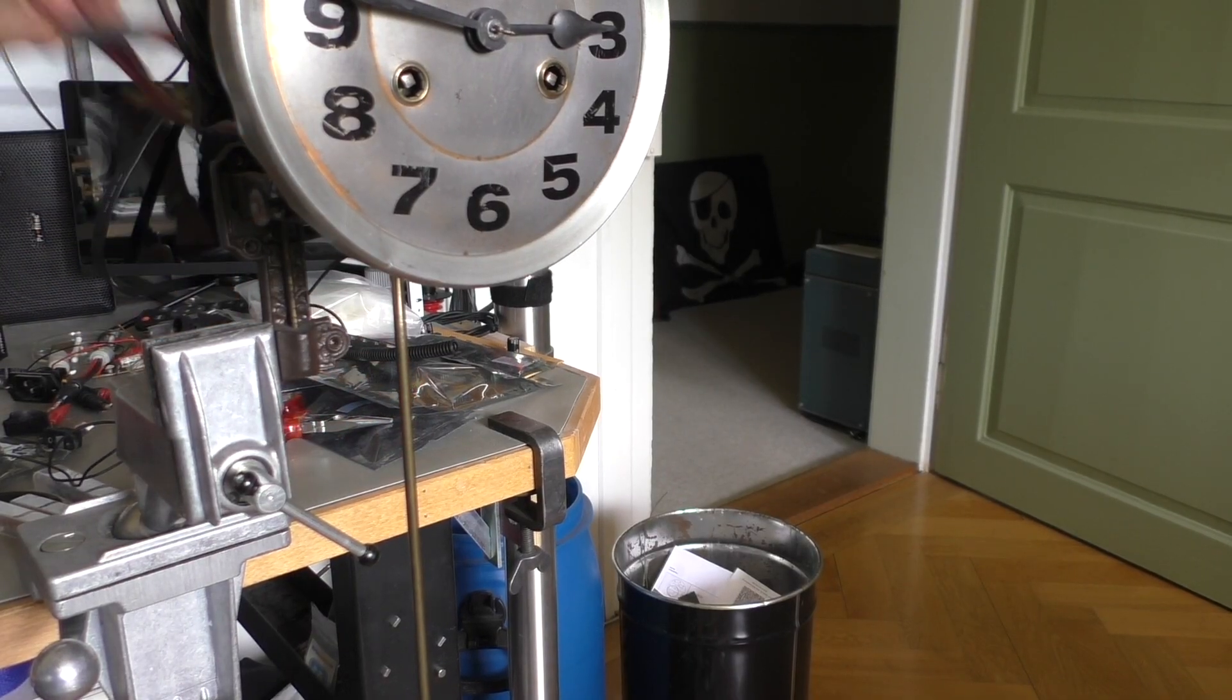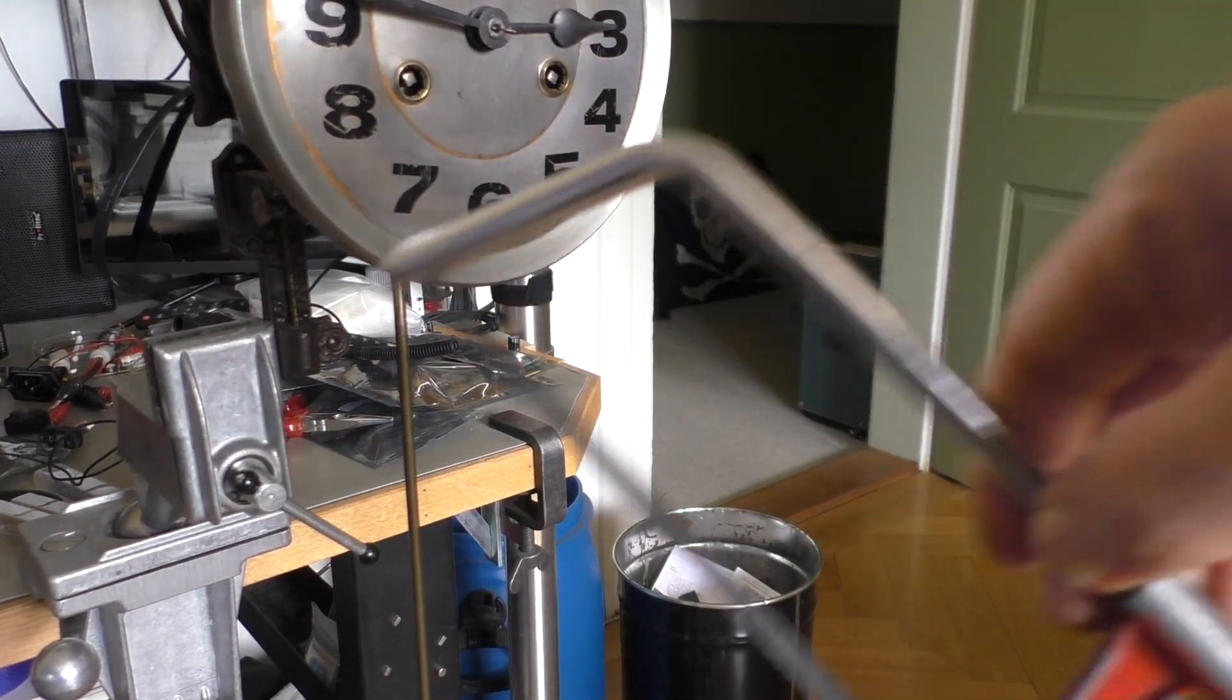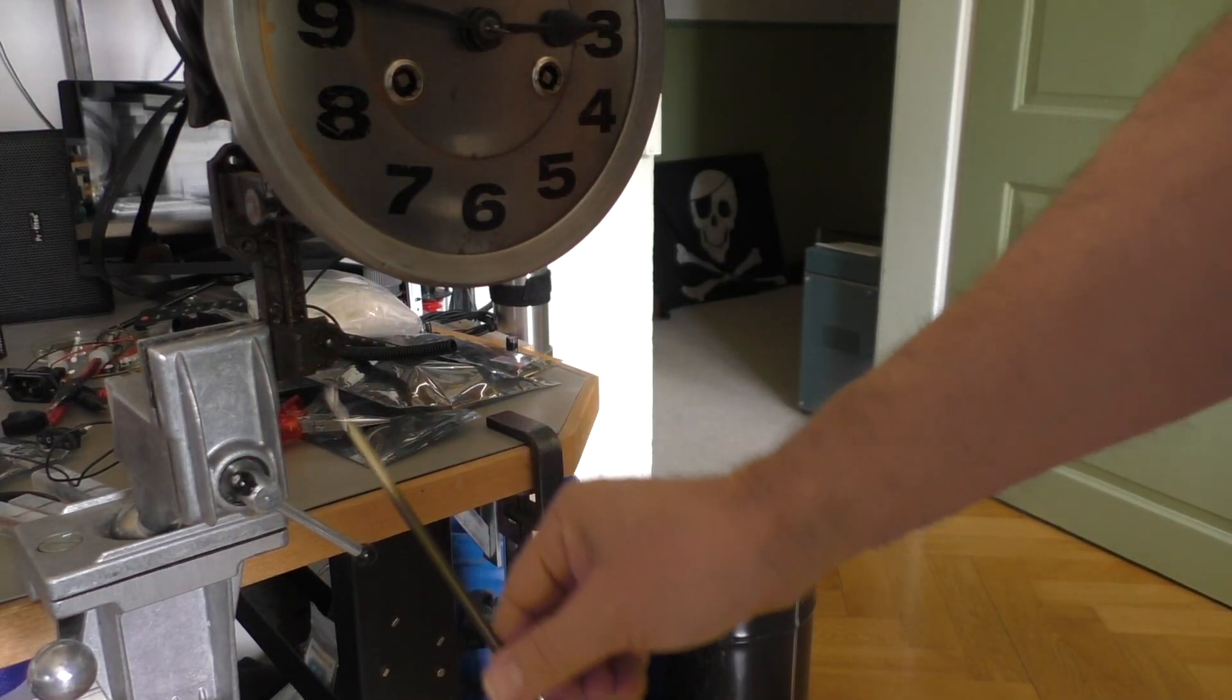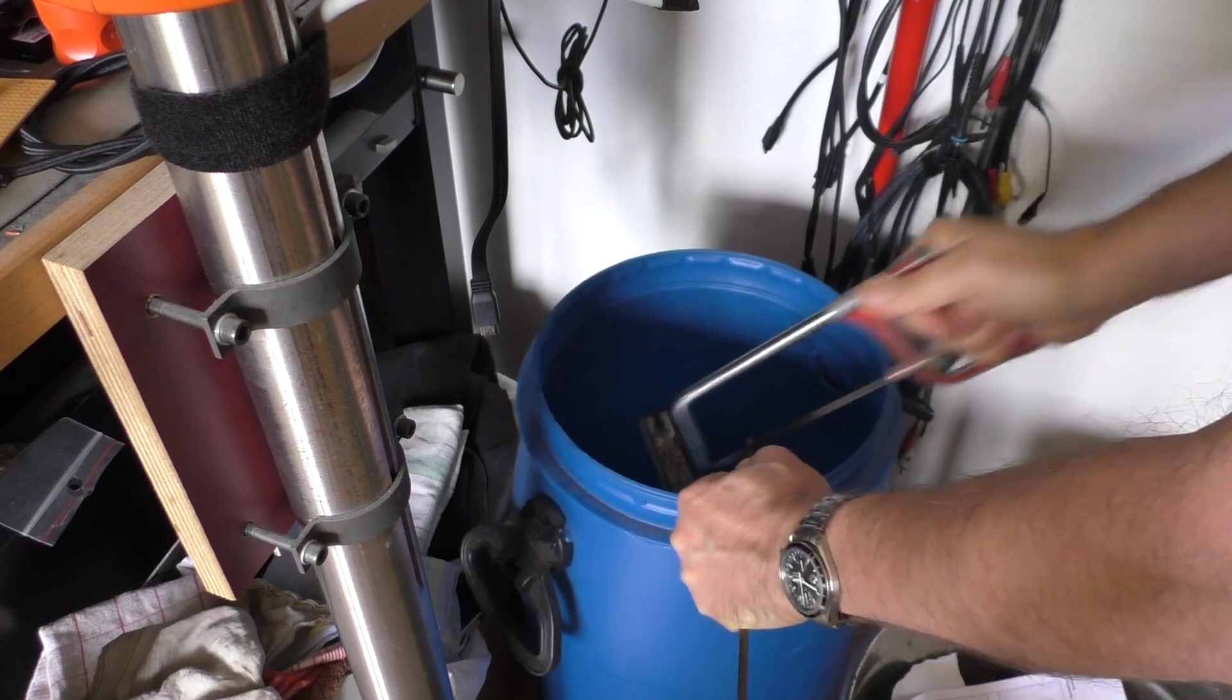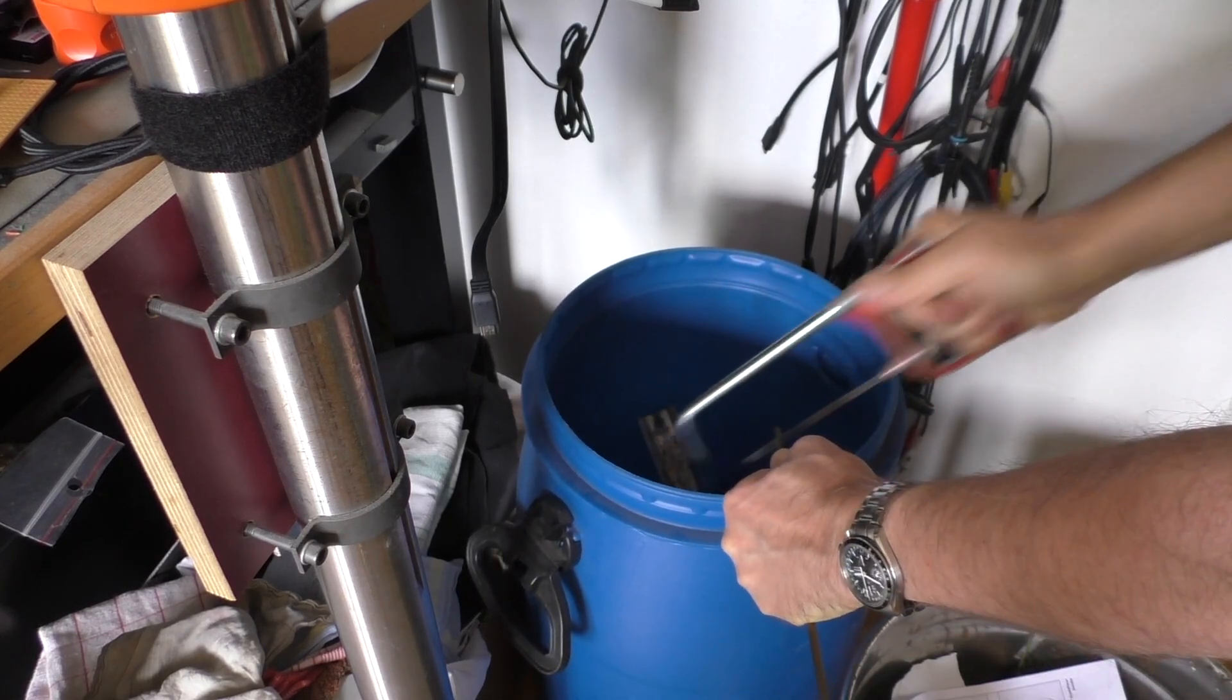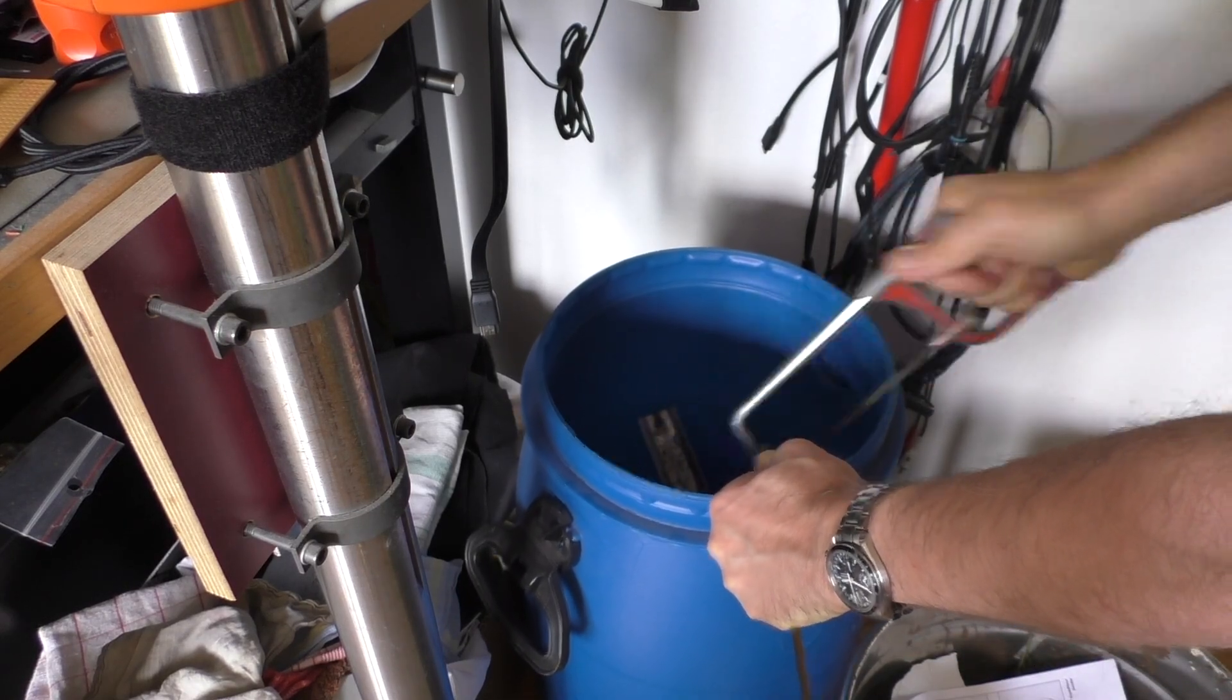And when the clock is too slow that means the pendulum is too long, so I have to cut a little bit from that pendulum to make it right. And I shortened it by about 2 centimeters.